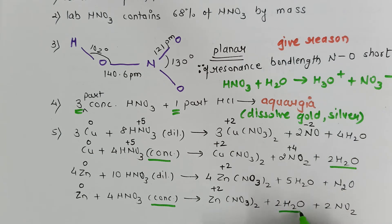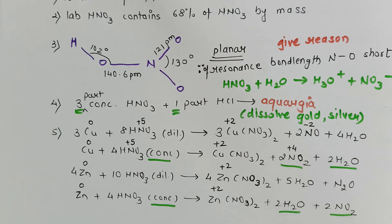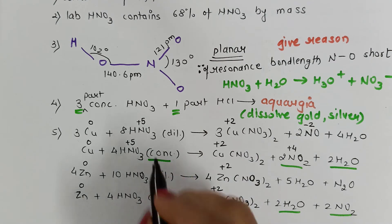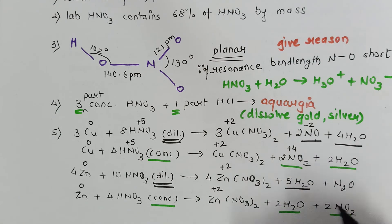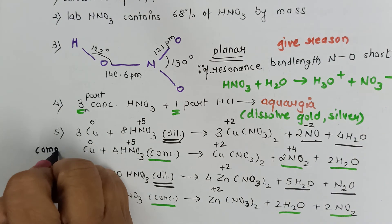For concentrated nitric acid reacting with both zinc and copper, the byproducts are the same: water and NO2. For dilute nitric acid, the metal nitrate is again formed; water is a common byproduct in both cases, but in the case of copper you get NO as a byproduct, while in the case of zinc you get NH4NO3. Remembering the common byproducts makes these reactions easy, as they are all asked as 'complete the equation' type questions.